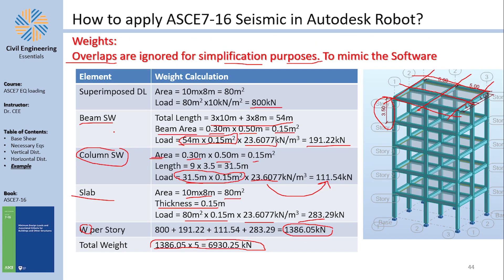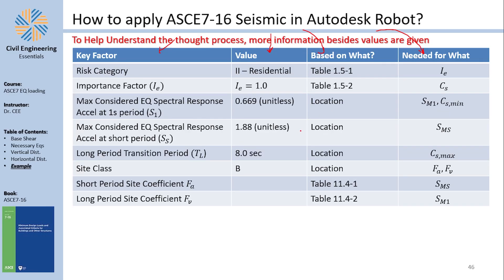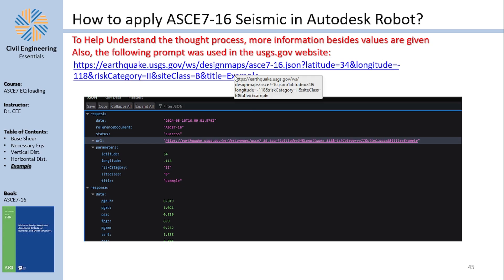The base shear V equals Cs multiplied by W. Our mission now is to find Cs, and there are many things needed: Ss, S1, TL, Sds, and more. If you missed the earlier lecture explaining these, it's highly recommended you check it out. Many of these values are location-dependent and must be obtained from reference maps or tools.